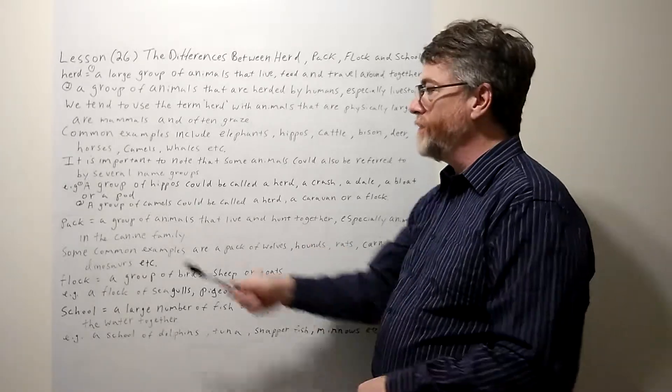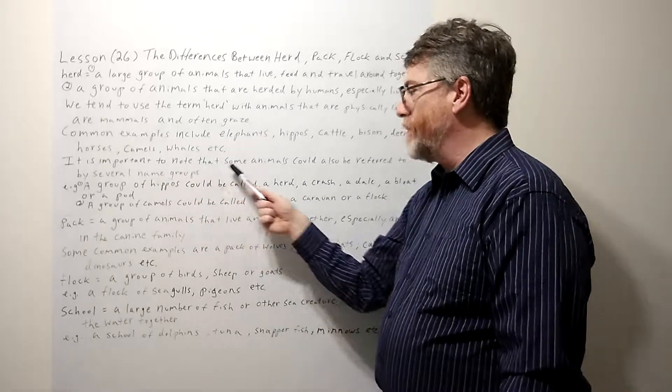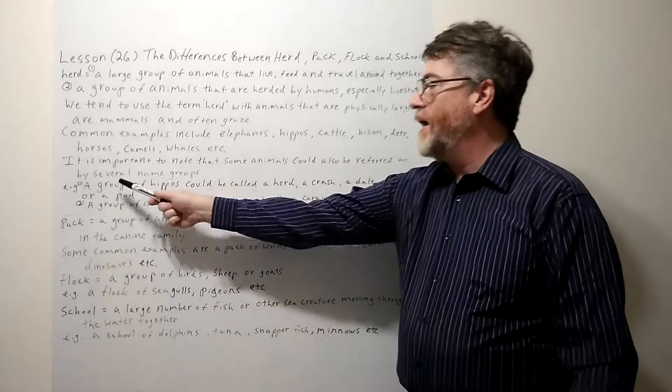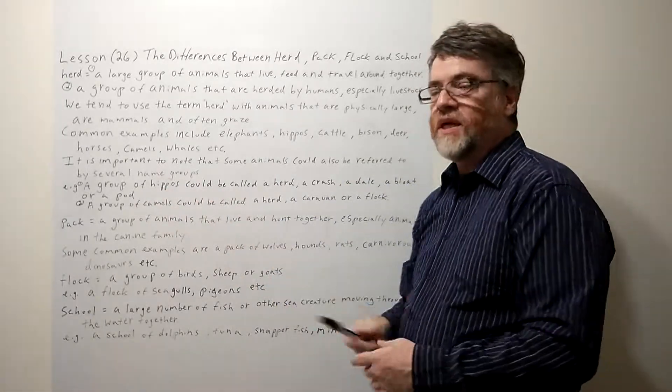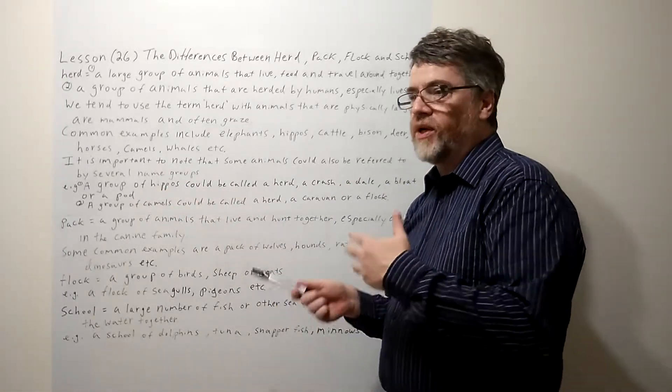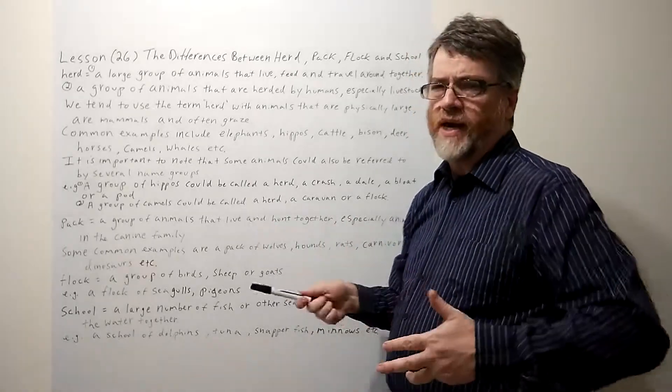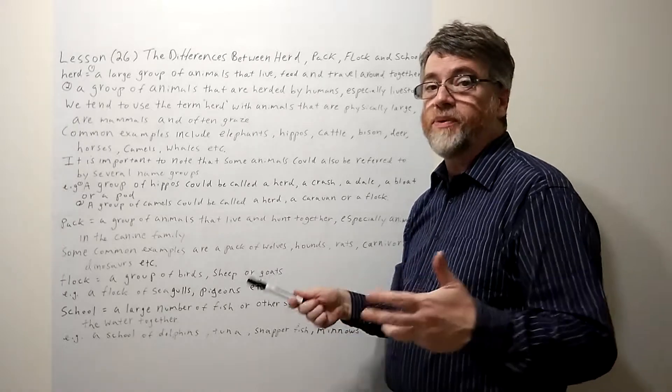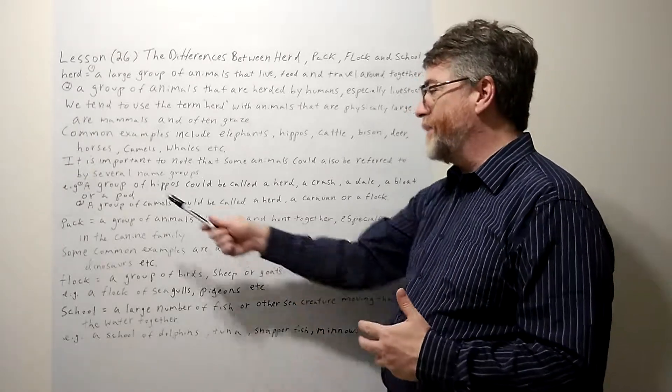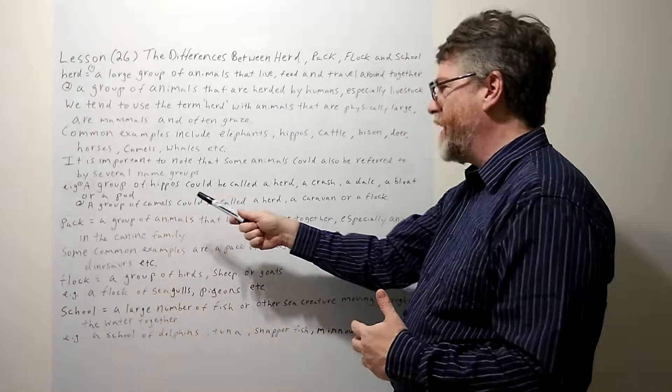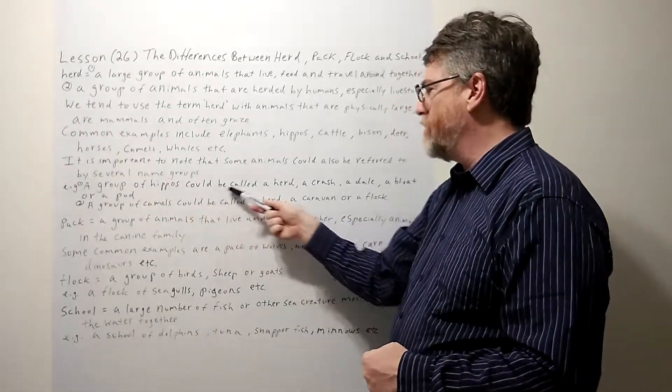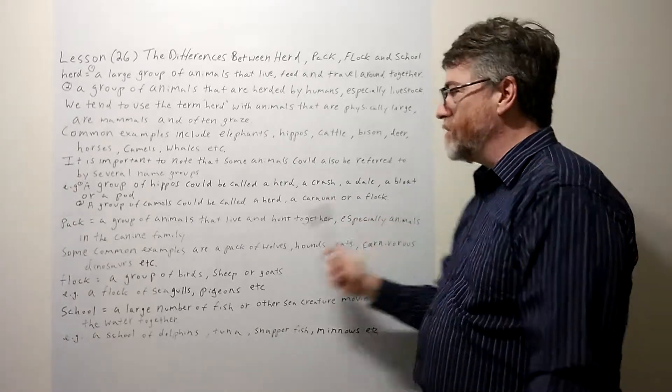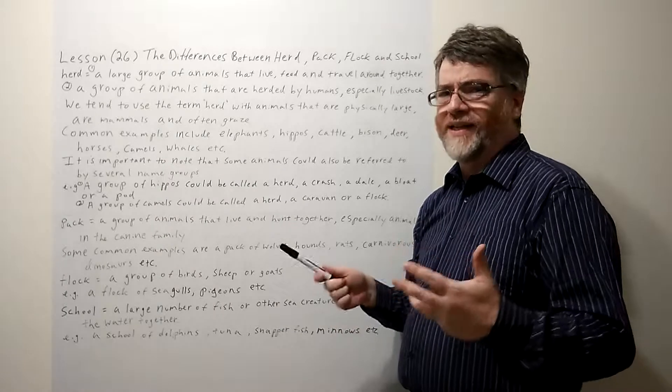Here's the next point to pay attention to. It is important to know that some animals could also be referred to by several name groups. A lot of animals may be referred to in two or three groups. I'll give you one example. Hippos has about five, I think. A group of hippos could be called a herd, could be called a crash, could be called a dale, could be called a bloat, or could be called a pod.